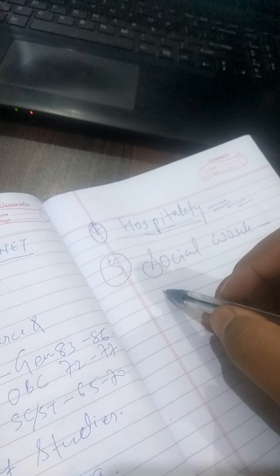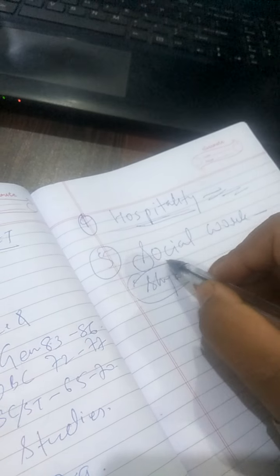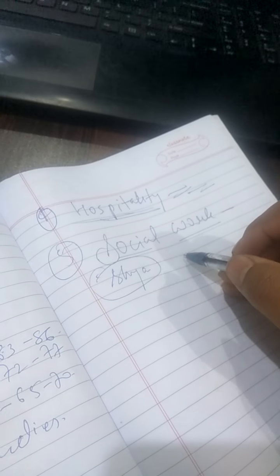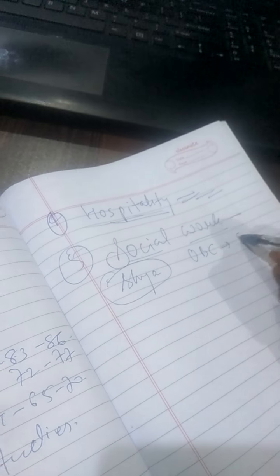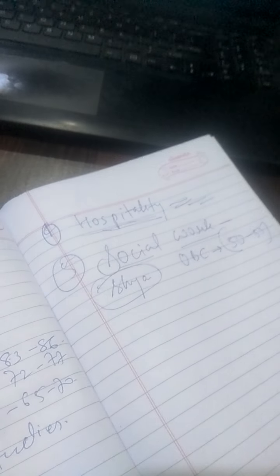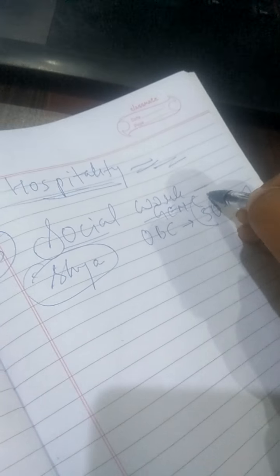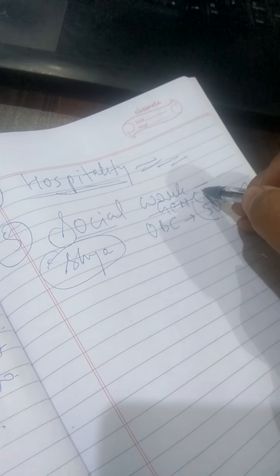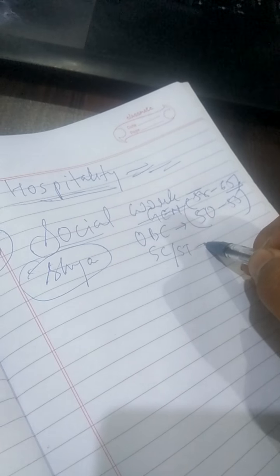Now coming to a question asked by one of my friends about Social Work. My friend Sam is in the Social Work department. He mentioned a cutoff in the range of 50 to 55. For the general category I think it should be around 58 to 65. For SC/ST you can further decrease it.